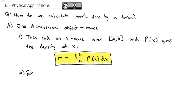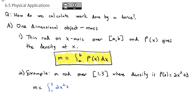For example, if I have a rod over the interval from 1 to 3 where the density is given by ρ(x) = 2x² + 3, to calculate the mass we integrate from 1 to 3 of that density function, 2x² + 3 dx. Integrating we get 2x³/3 + 3x evaluated from 1 to 3.